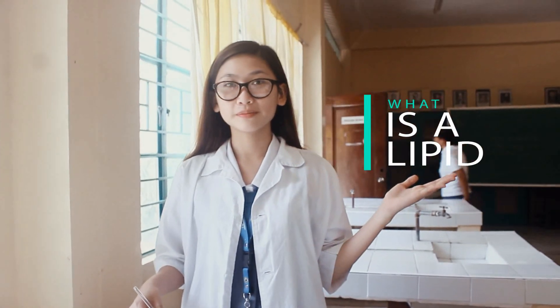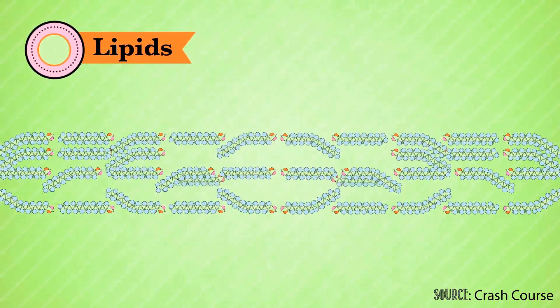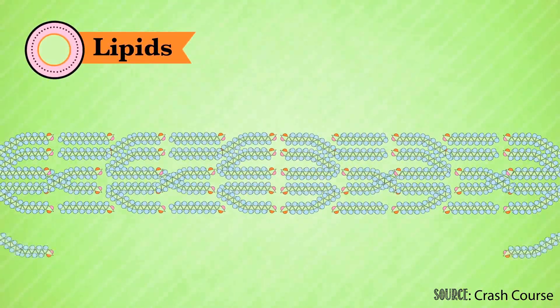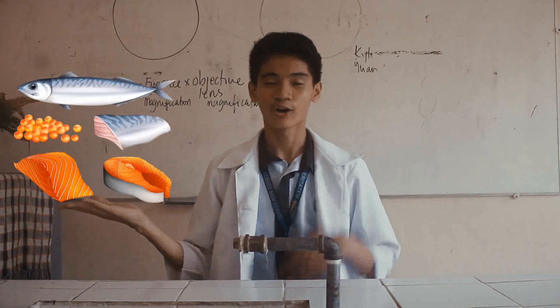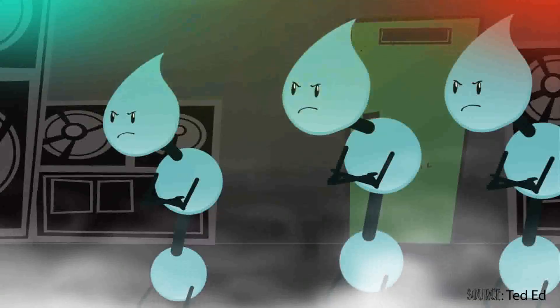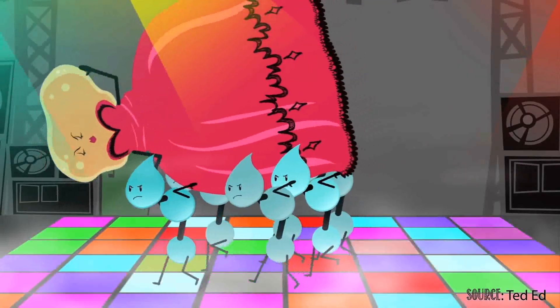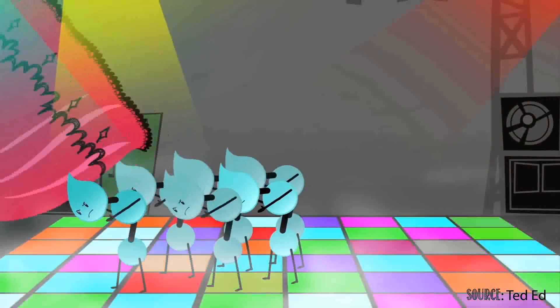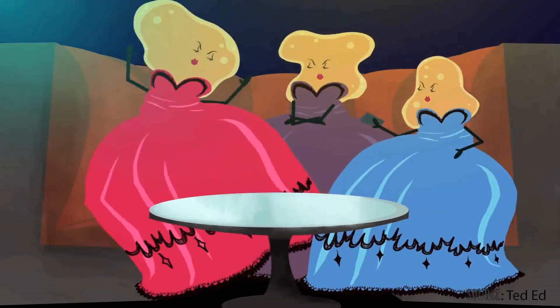We always hear about lipids during biology class in high school. Before anything else, let us first define what is a lipid. A lipid is a diverse group of organic compounds including fats, oils, and certain components of membranes that are grouped together because they do not interact appropriately with water.